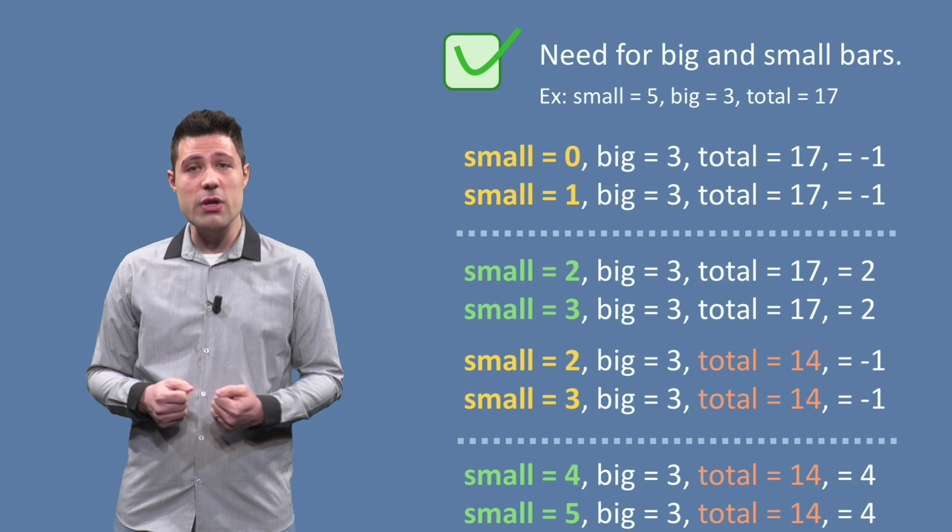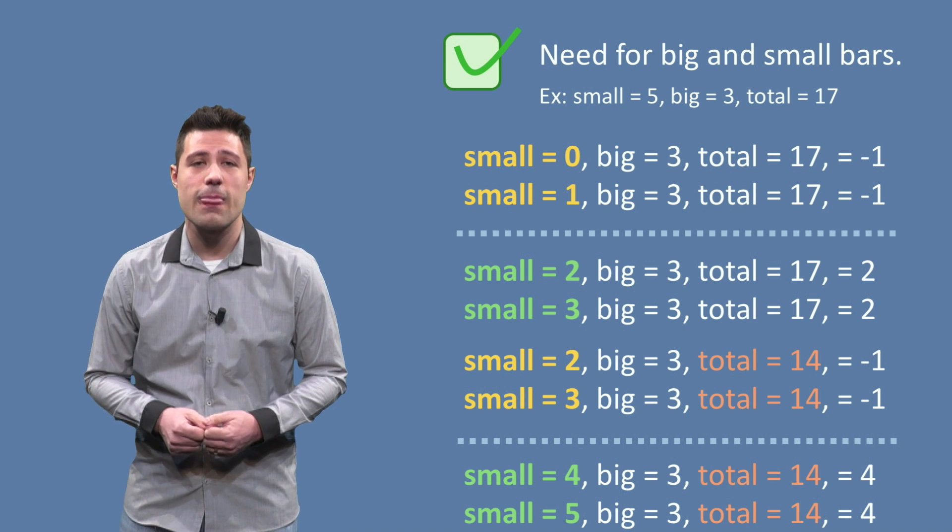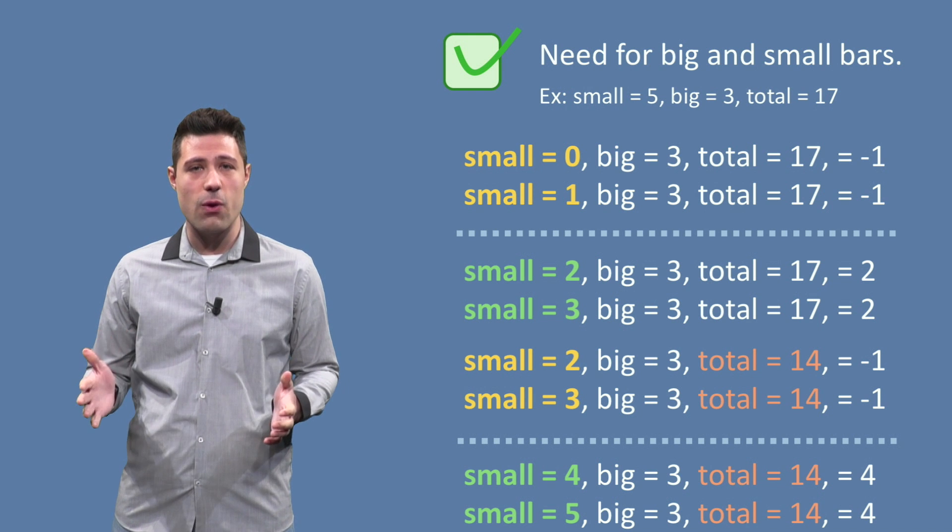If we have total equals 14, for example, the boundary happens when small is between 3 and 4.